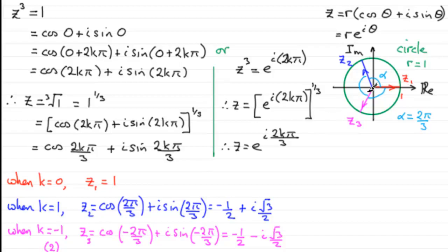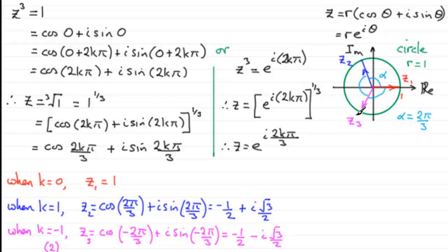If using the exponential form, we still take k equals 0 (argument 0, giving z equals 1), k equals 1 (argument 2π/3, modulus 1), and k equals −1 (argument −2π/3, modulus 1) — no different from the mod-arg approach. It's up to you which system you use.